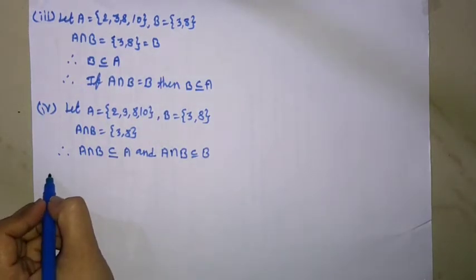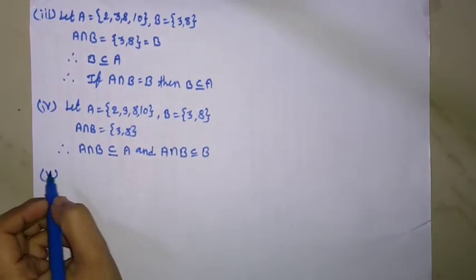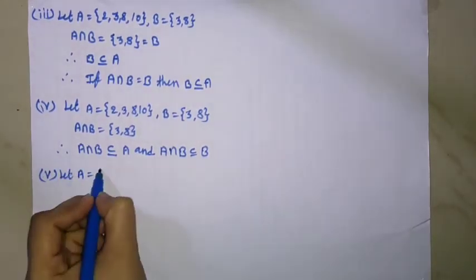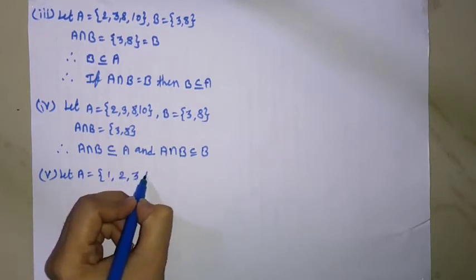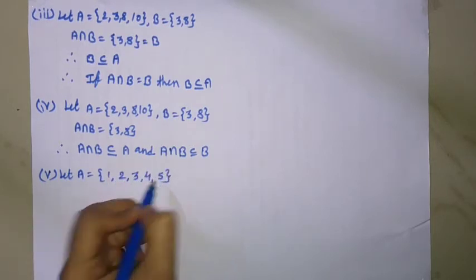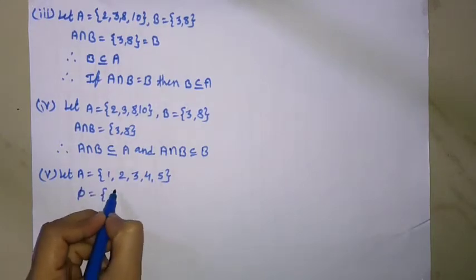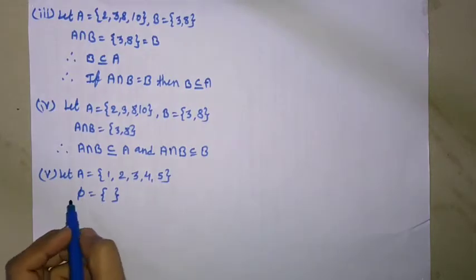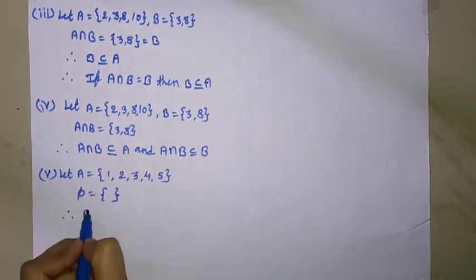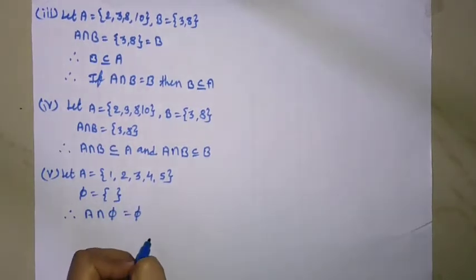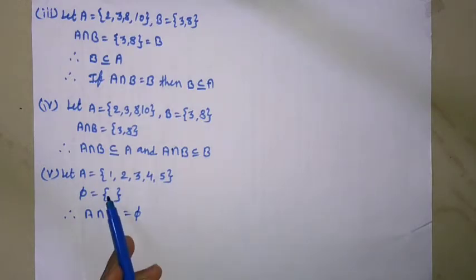Example of the fifth property. Let A equal to {1, 2, 3, 4, 5} and φ equal to the empty set. Therefore A intersection φ equal to φ, because there is no common element between set A and the empty set.